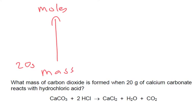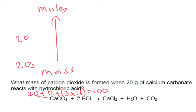First we need to work out the molar mass of calcium carbonate. Calcium is 40, carbon is 12, and we've got oxygen — three of them — so 3 times 16. Add all these up and we get a molar mass of 100. So mass divided by molar mass gives us our number of moles, which is 0.2.